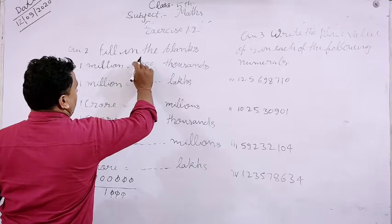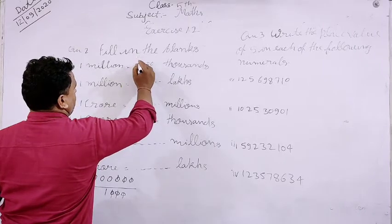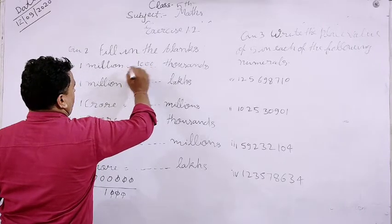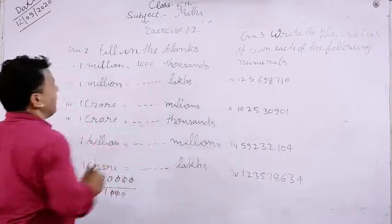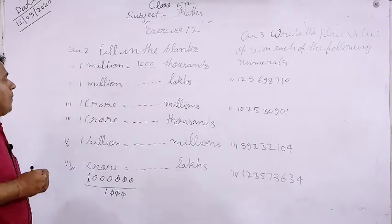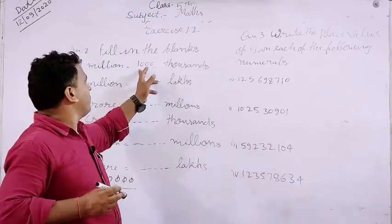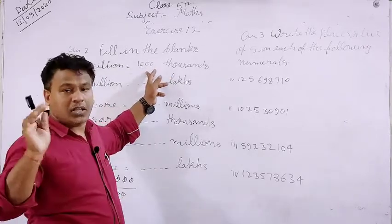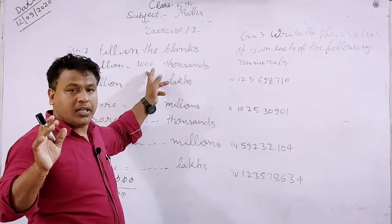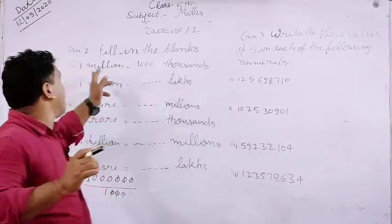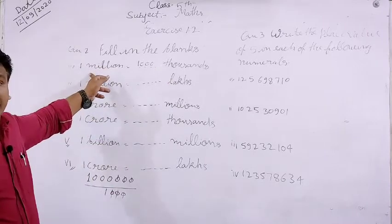Yaani one million mein kitna thousands hoga? One thousand thousands equal to one million.